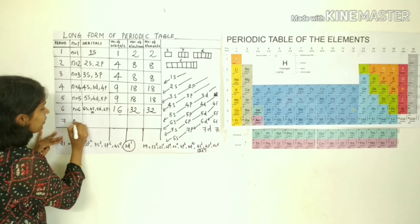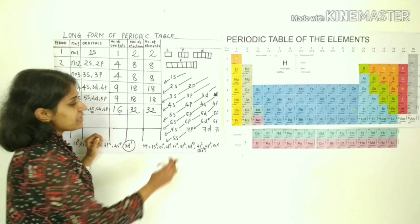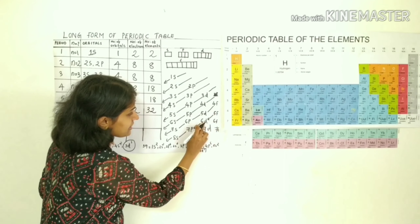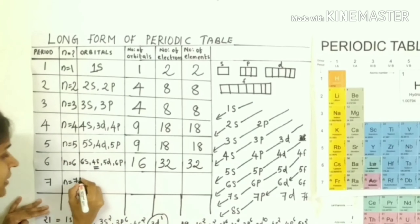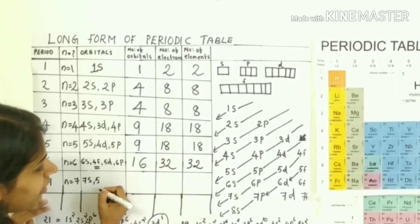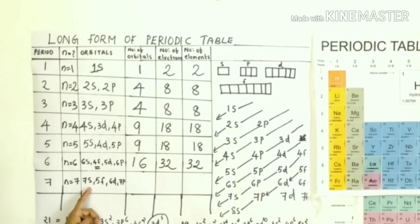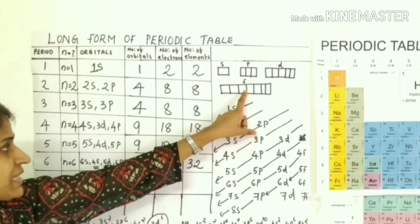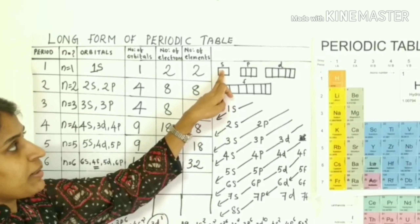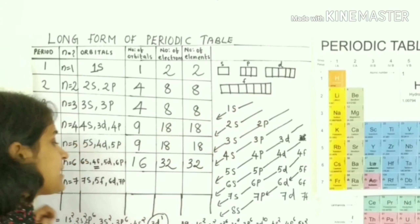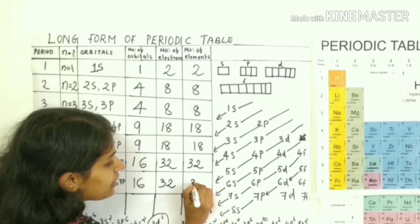The seventh period has n equal to 7. The orbitals are 7s, 5f, 6d, and 7p. The orbital count is: s=1, f=7, d=5, p=3. Total: 1+3=4, 4+5=9, 9+7=16 orbitals. Number of electrons = 16 × 2 = 32. So the seventh period also has 32 elements.